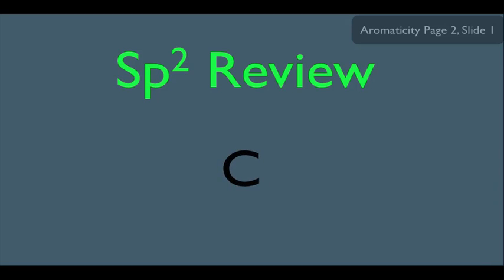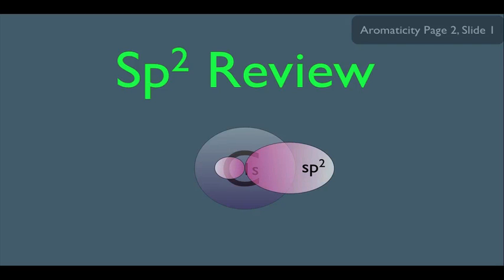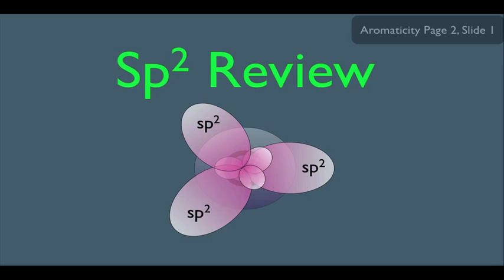For instance, let's say you have a carbon that is sp2 hybridized. It has its 1s orbital, which is unhybridized. Since it's sp2, there are 1s and 2p orbitals that have been hybridized together, and what we end up getting is three sp2 orbitals. Remember, there are three p orbitals total to begin with, so we have one unhybridized p-orbital remaining. We want to focus on that unhybridized p-orbital.